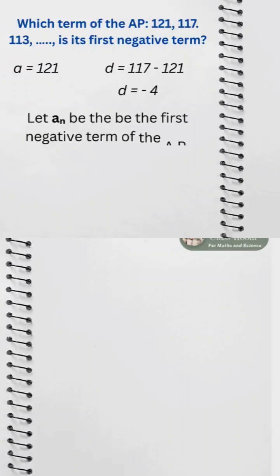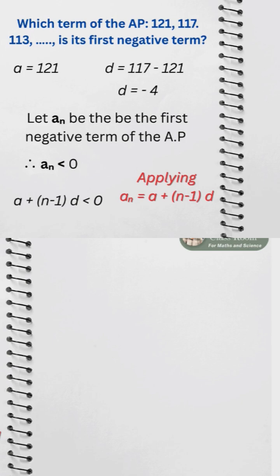Let an be the first negative term of the AP, so an has to be less than 0. Applying an equals a plus n minus 1 d, we can replace an with a plus n minus 1 d, so we get a plus n minus 1 d less than 0.